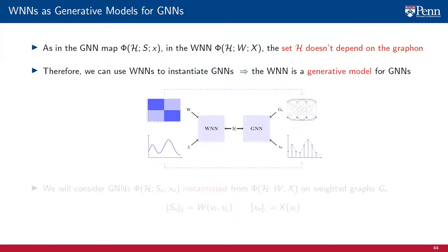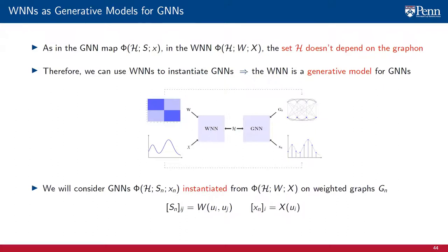In other words, the WNN acts as a generative model for GNNs, in the same way that graphons and graphon signals are generative models for graphs and graph signals. In particular, in our transferability analysis, we will consider GNNs Phi on weighted graphs G_N and graph signals X_N instantiated from the WNN Phi on the graphon W and graphon signal X. To instantiate a GNN from a WNN, it suffices to instantiate the graph shift operator S_N and the graph signal X_N from the graphon W and graphon signal X. The parameter set H is shared.